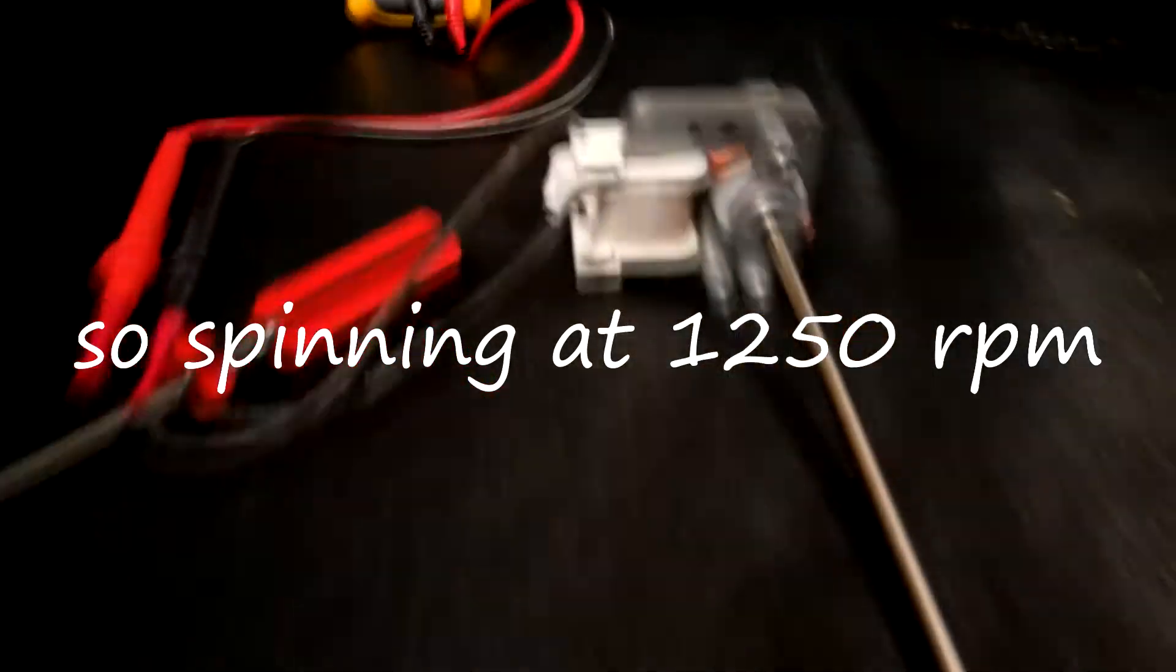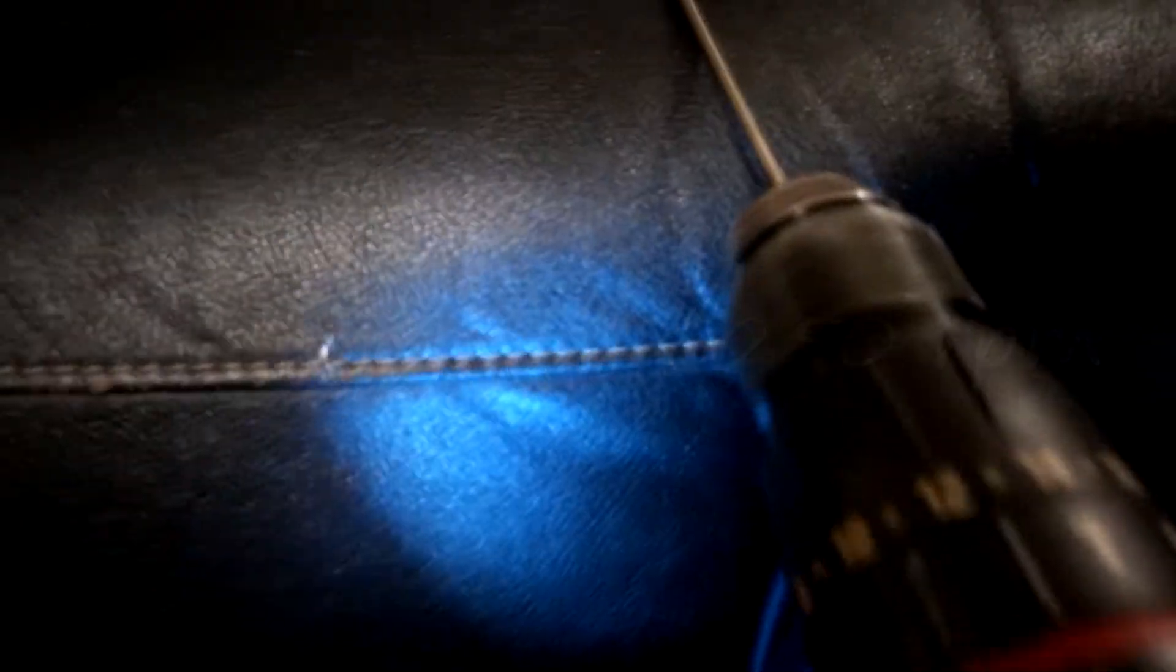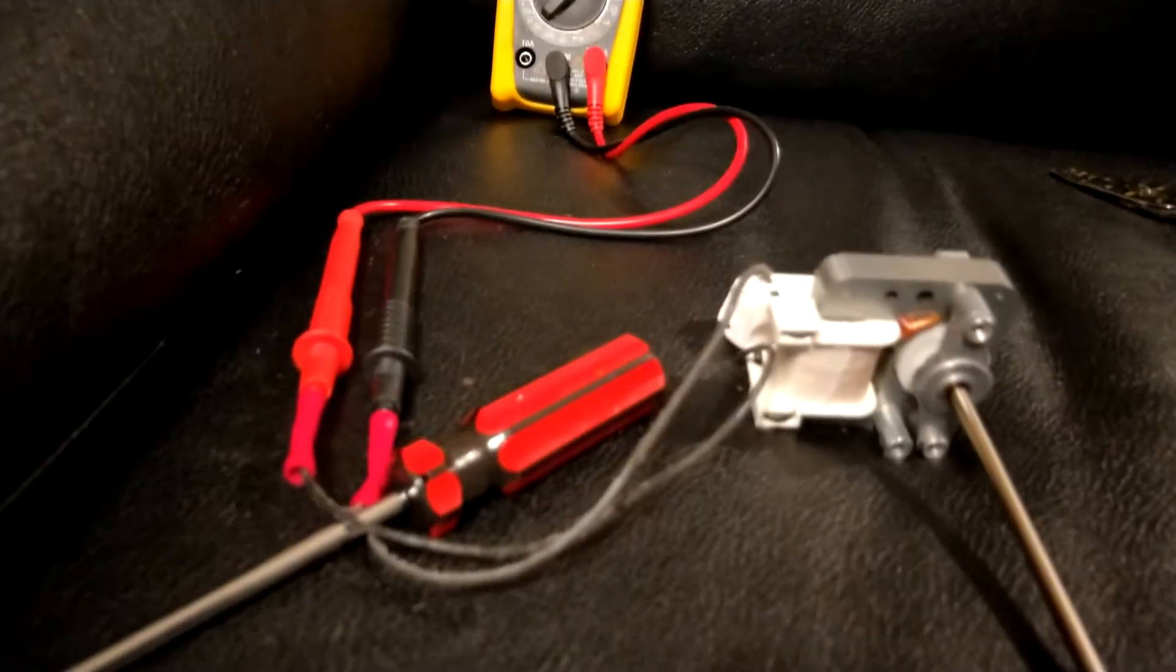So again about 1.7 volts. 1.8. And that's how the RPM output the drill. So, it's a slight result.